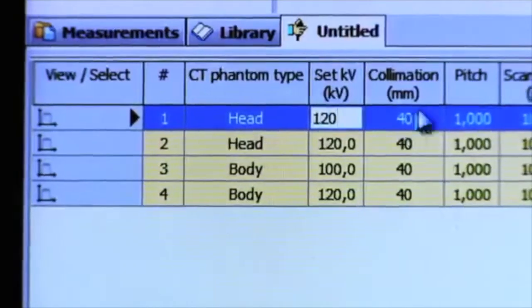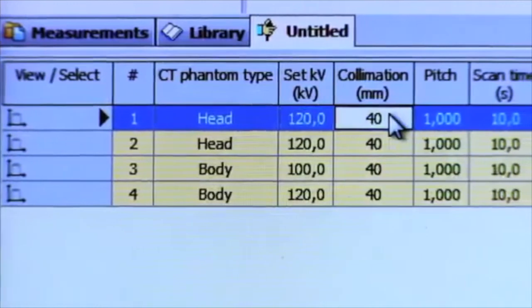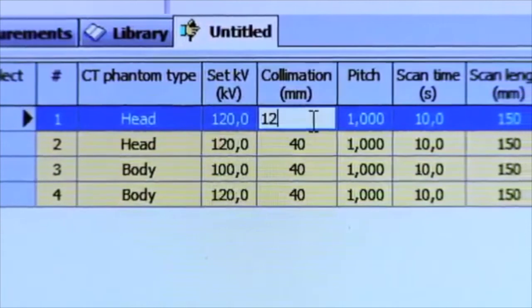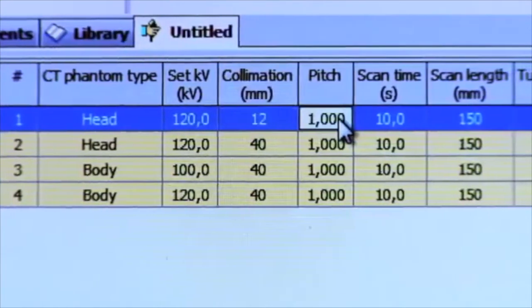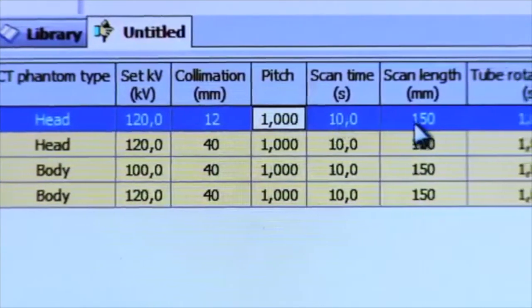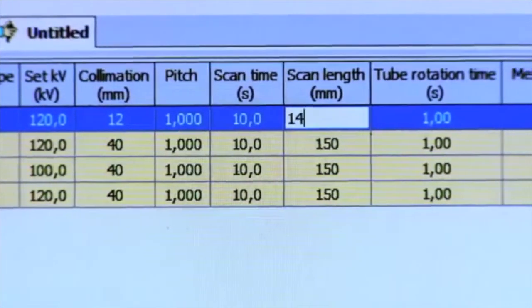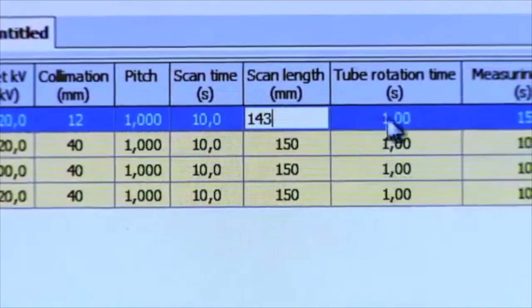Kilovolt. Collimation—this is the thickness of the total detector area used in the CT. Sometimes you have to calculate the thickness yourself. Pitch. Scan length—this parameter must be added to get the dose length product.